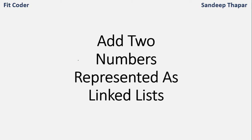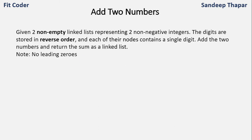Hi everyone. In this video we'll discuss how to add two numbers which are represented as linked lists. We are given two linked lists representing two non-negative numbers. The digits are stored in reverse order and each node contains a single digit. We have to add the numbers and return the sum as a linked list.